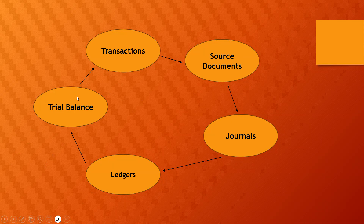The usual 12-month financial period is 1 March to 28 February, but each business can choose whatever date they want. It can be a calendar year — 1 January to 31 December — or it can be 1 July to 30 June. They can choose. Let's assume this business's 12 months runs from 1 March to 28 February 2023.